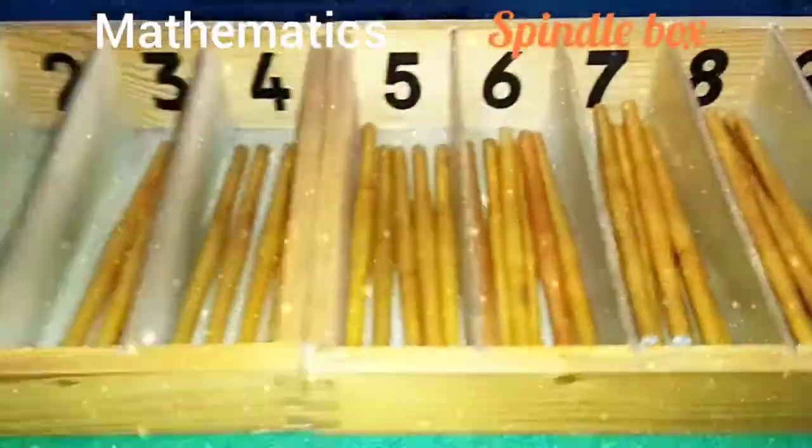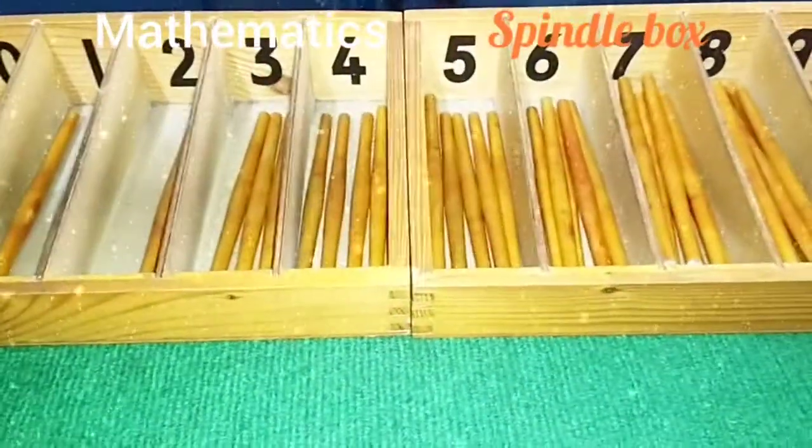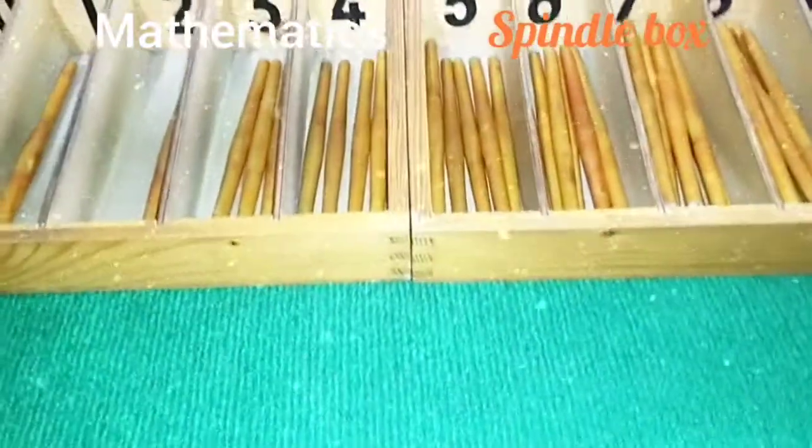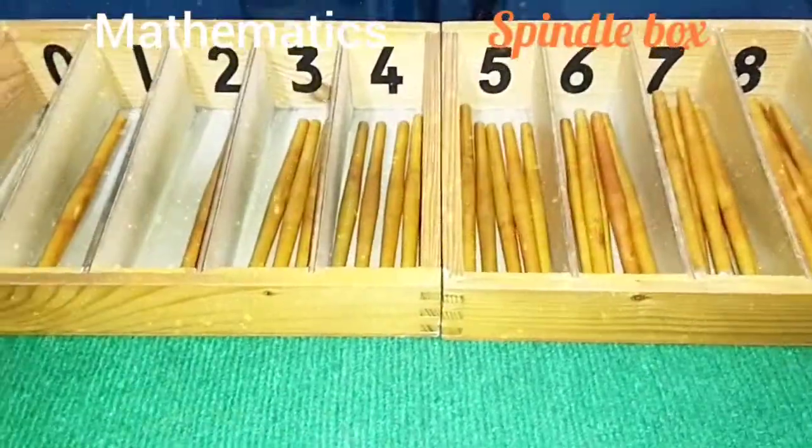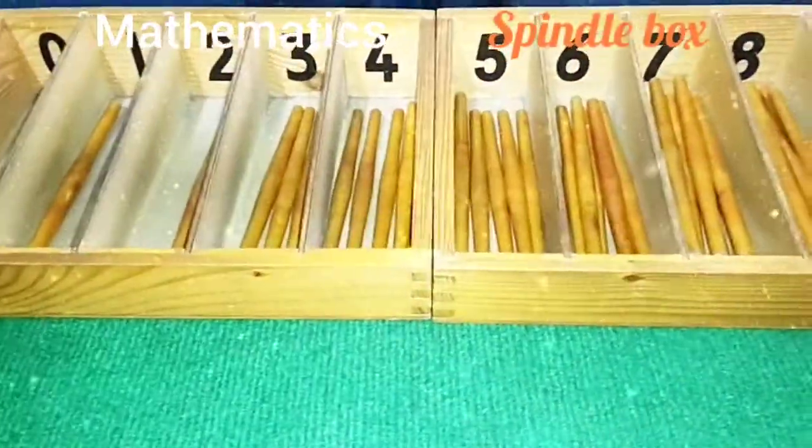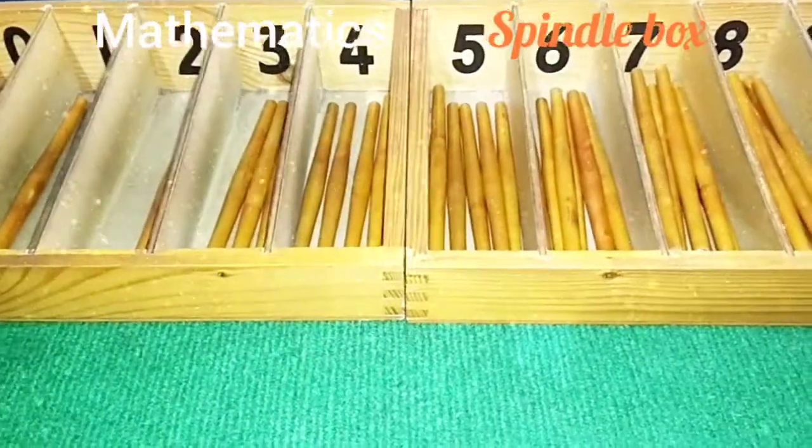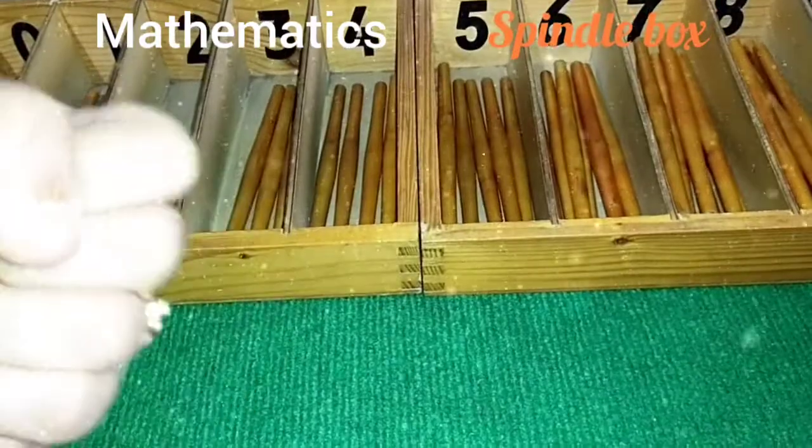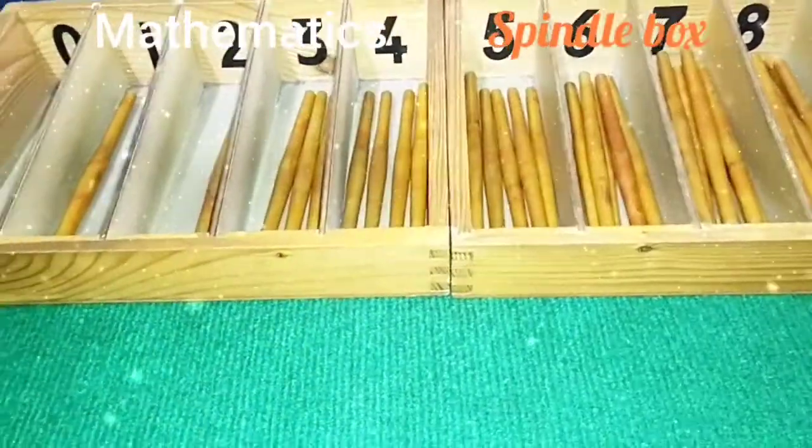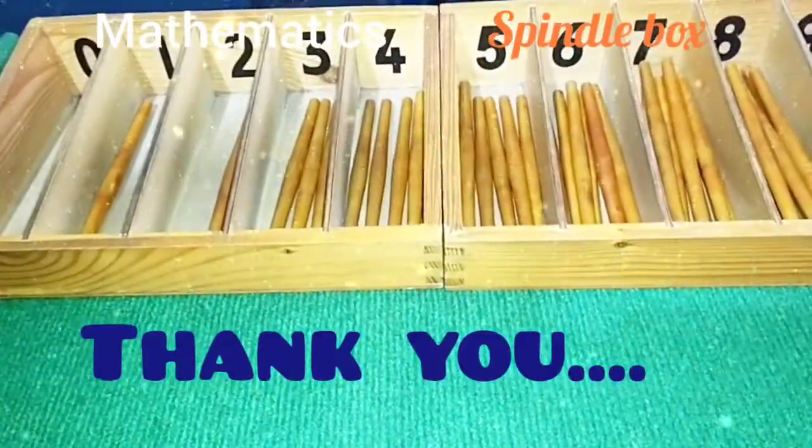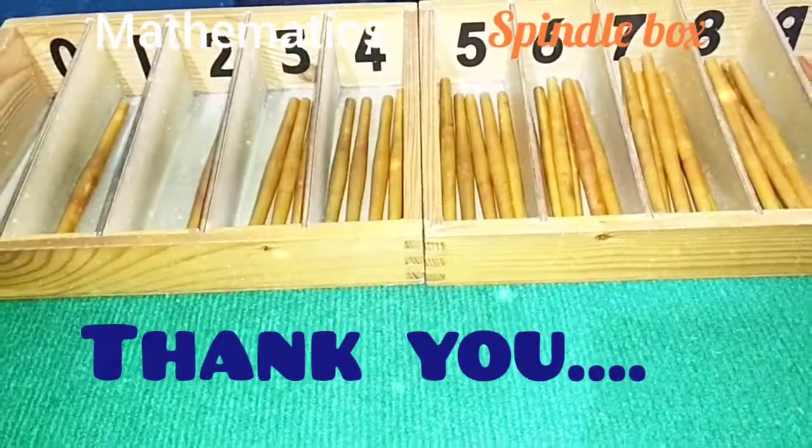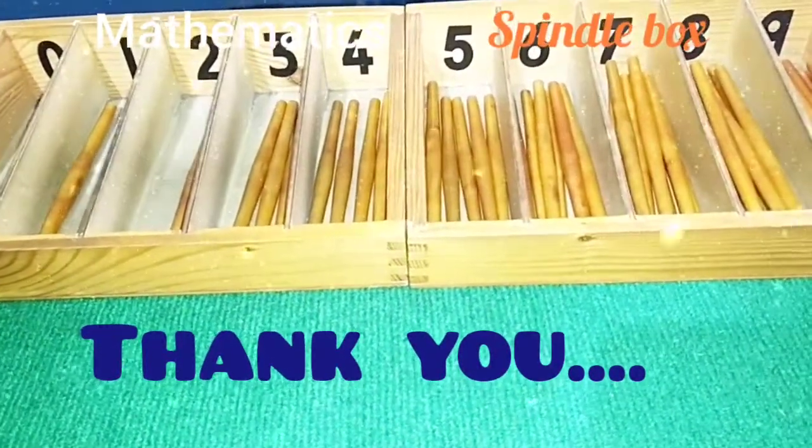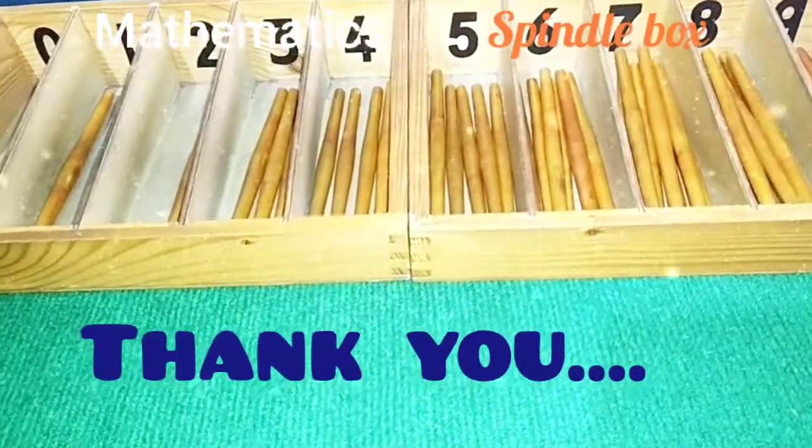And child will get the idea of all quantities, zero to nine. Quantities of zero to nine. And the muscle expressions of the quantities. Muscle expression of the quantities. Okay. This is the initial exercise of mathematics. After that, they will go the next activity using concrete and abstract. Okay. Thank you.